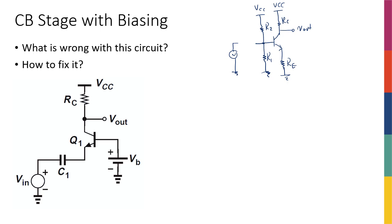We cannot connect the signal source directly to the base. If the signal source, say Vin is 1 millivolt times sine of 50t — a 50 Hz sinusoidal with magnitude 1 millivolt — connecting it directly would basically cancel out the effect of the biasing circuit, because it's forcing the voltage at the base to be 1 millivolt up and down around 0 volts. It's not going to have any DC voltage to bias the transistor to 0.7 or 0.8 volts, so nothing would have worked.